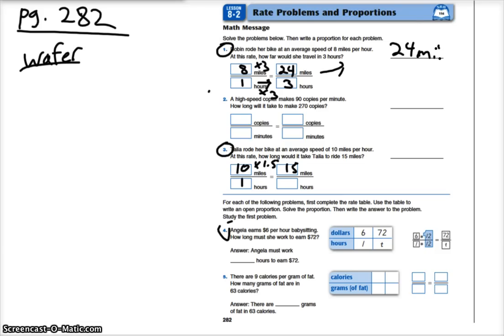So if we multiply the top by 1.5, we also have to multiply the bottom by 1.5. So 1 times 1.5 is 1.5. So now at that rate she's driven or rode her bike 15 miles in 1.5 hours. So make sure we get that up here: 1.5 hours.